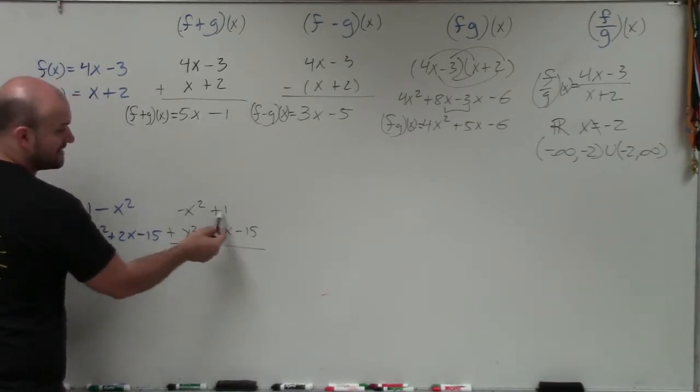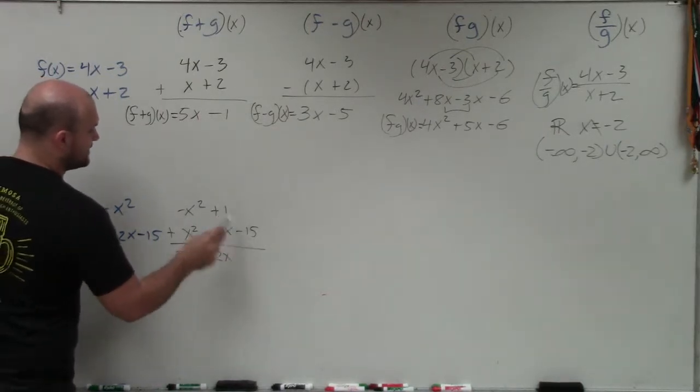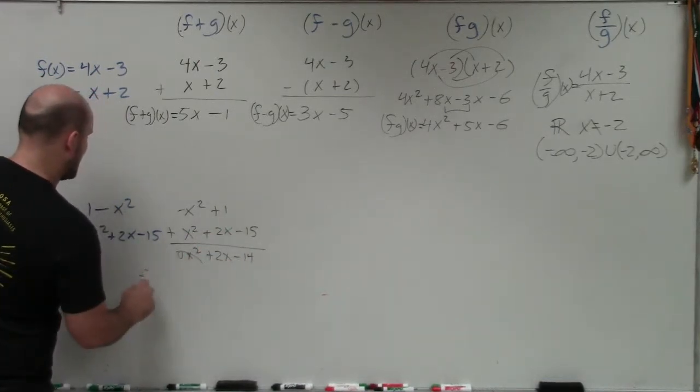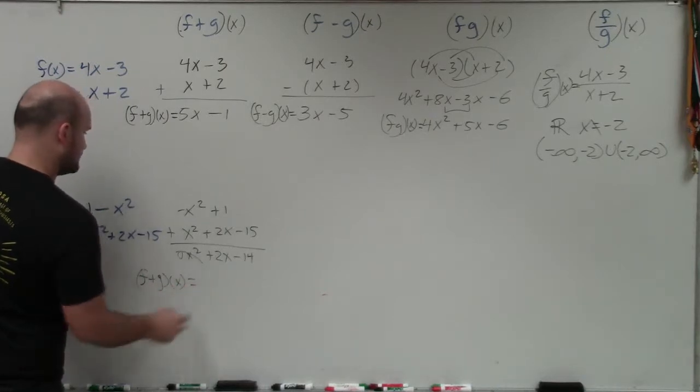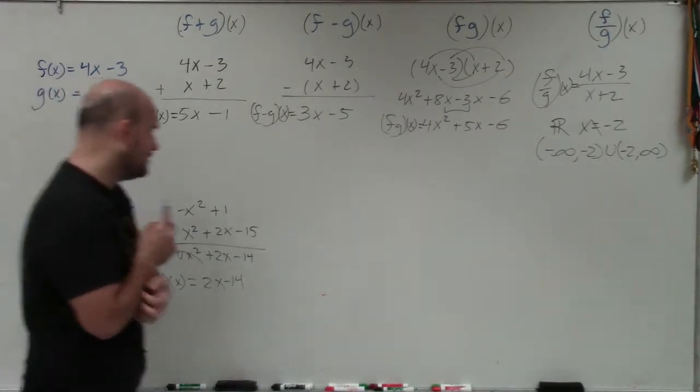And remember, we are adding these. So negative x squared plus x squared is 0x squared, which is just 0. 2x, I don't have an x up here, so it's just going to be a positive 2x. And then 1 plus a negative 15 is a negative 14. So therefore, f plus g of x is equal to 2x minus 14.